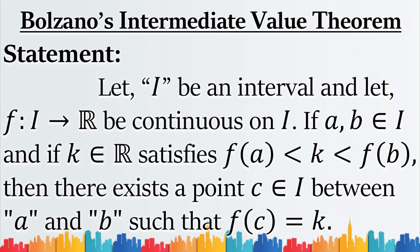Let I be an interval and I is a subset of the set of real numbers. Let a function F be defined from I to the set of real numbers, and this function F is continuous on I. Now let any two elements a and B from the domain of F, and one element K from the set of real numbers in the range of F, satisfying the condition that K lies between the images of a and B. Then there exists a point C from the domain of F, with C lying between a and B, such that K is the image of C.